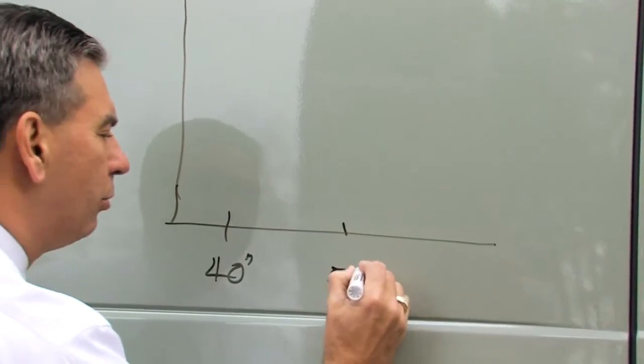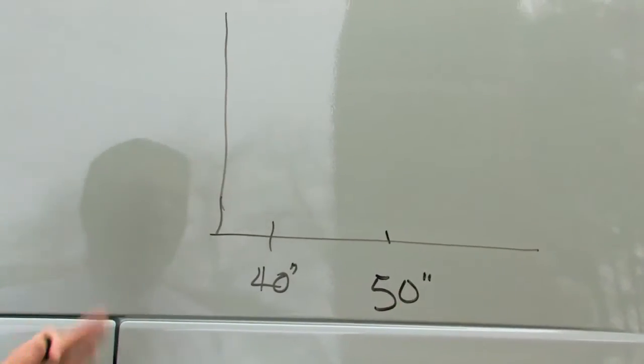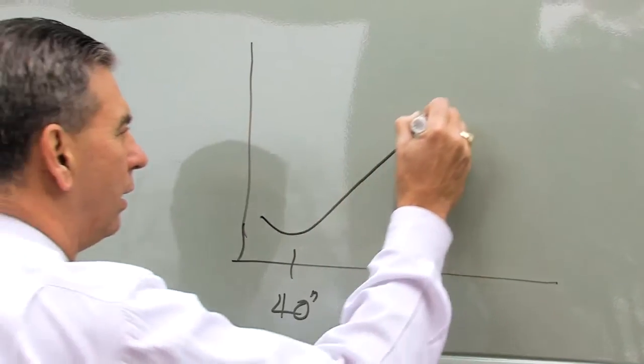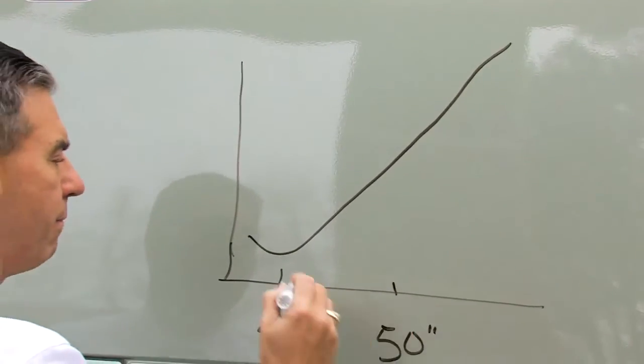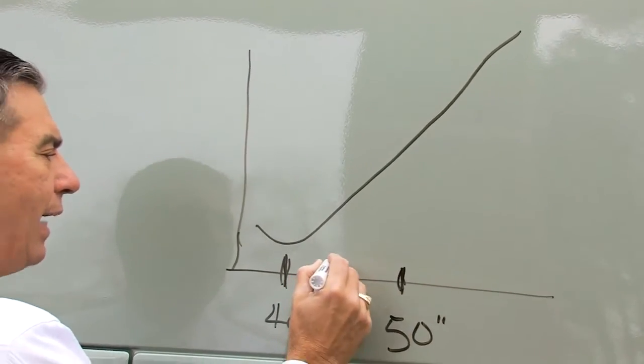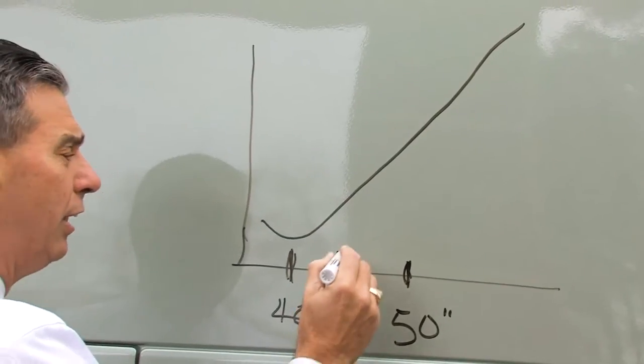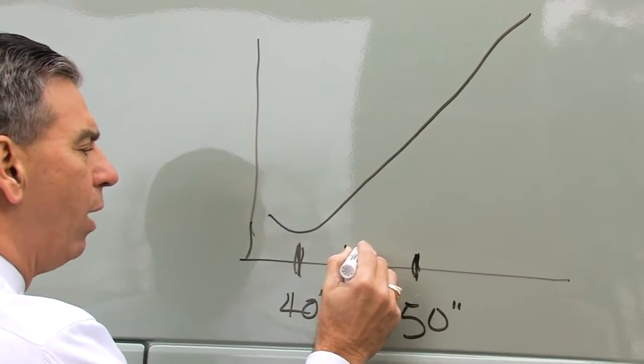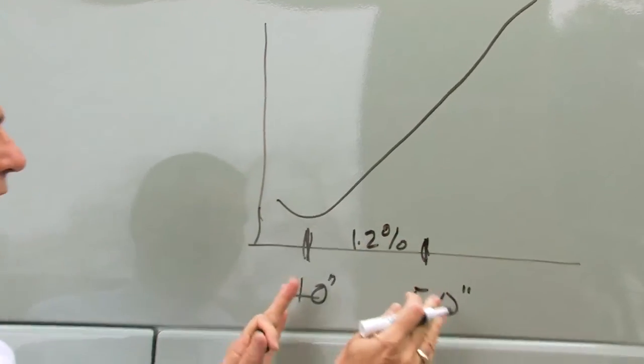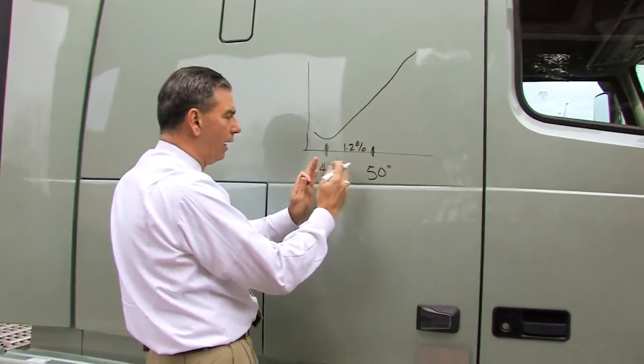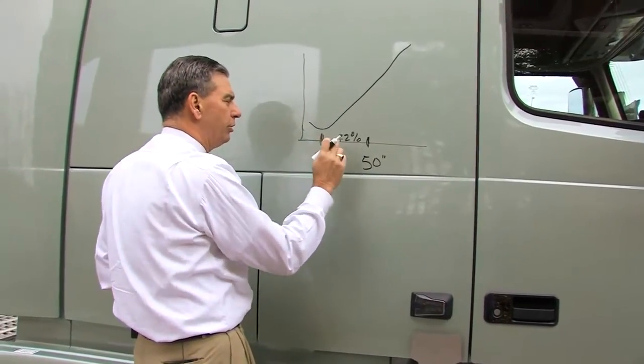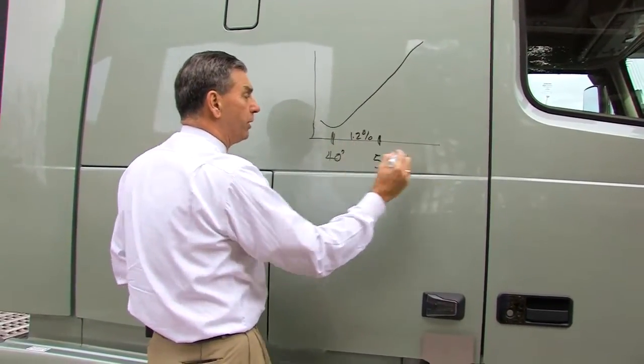If you increase the trailer gap to just 50 inches, you have this exponential curve that looks something like that. The difference between here and here is actually a reduction in fuel economy by about 1.2%. So that 10 inches increases the amount of turbulence that will reduce your fuel economy by 1.2%.